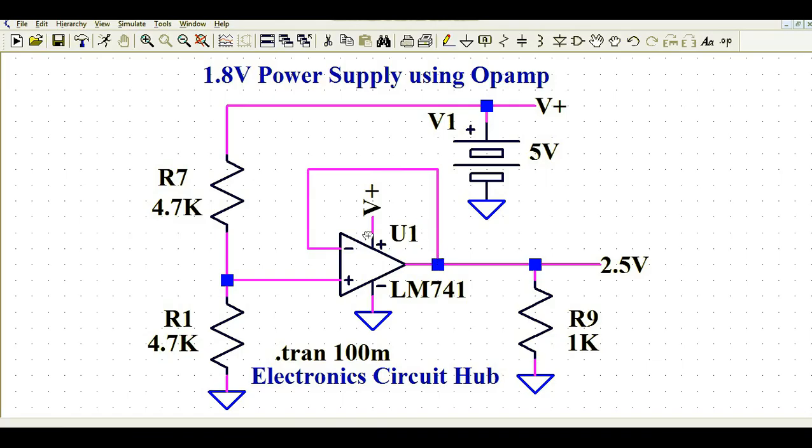That means the op amp is working as a voltage follower or unity gain amplifier or buffer. Whatever you have at the input, you're going to get the same at the output. But since we used an op amp, the op amp has high input impedance. It is isolating your input current with respect to your output current.